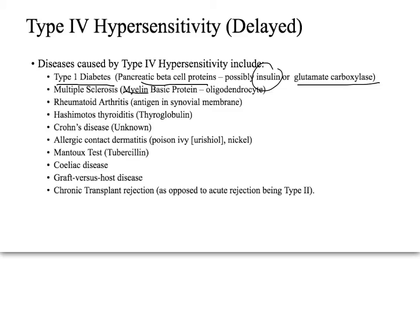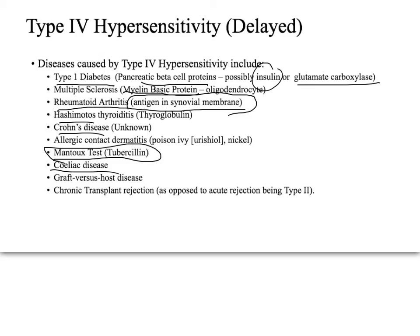In multiple sclerosis, myelin basic protein is the antigen and the body attacks the oligodendrocyte. Rheumatoid arthritis may fall under multiple types of hypersensitivity — in the type 4 context, an antigen in the synovial membrane is attacked by cytotoxic T cells and macrophages. Other type 4 examples include Crohn's disease, Hashimoto's, celiac disease, and graft versus host disease. The Mantoux tuberculin test is also based on type 4 hypersensitivity.